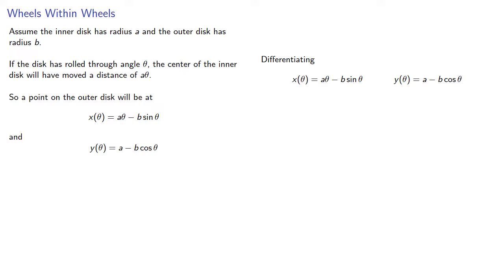Now if we differentiate both x and y, we see that x' is a - b cos θ. And since a is the radius of the inner disc and b is the radius of the outer disc...